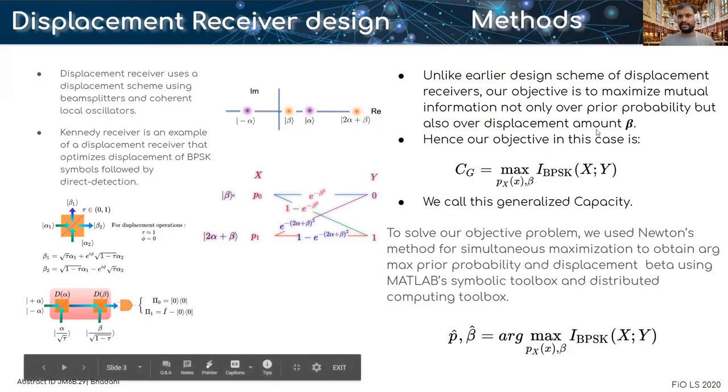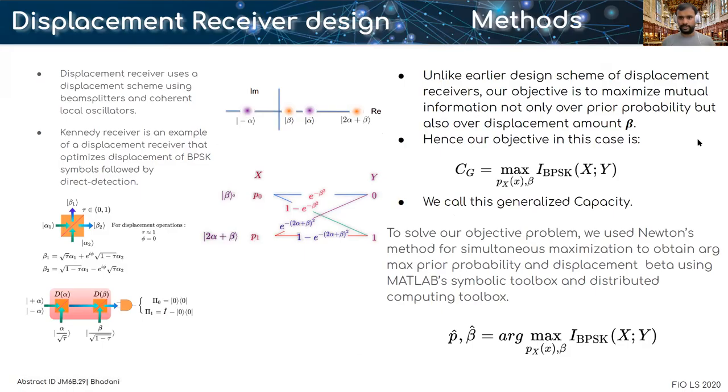Unlike earlier design schemes of a displacement receiver, our objective is to maximize mutual information not only over prior probability but also over displacement amount beta. Hence our objective is max of mutual information over prior displacement. We call this generalized capacity.